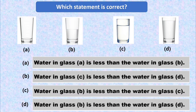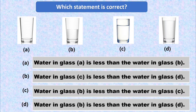Option D says water in glass B is equal to the water in glass D. You can see clearly water in glass B is less than water in glass D. So option A is the correct statement here — water in glass A is less than the water in glass B. This statement is correct at option A, so we are going to put a tick mark at option A.